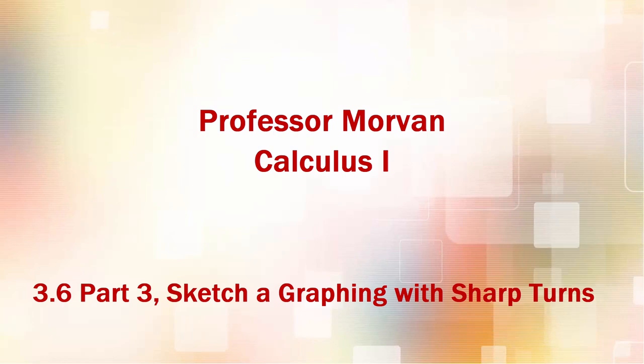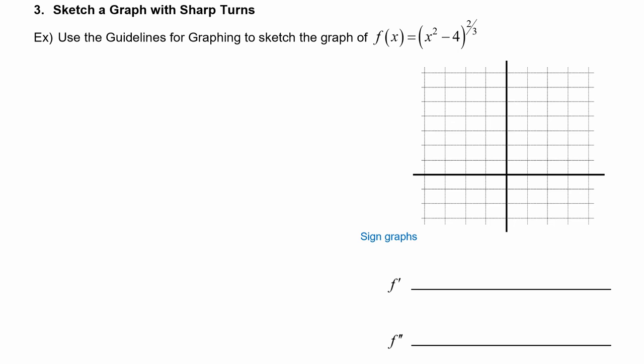In part three, you'll learn how to sketch a graph with sharp turns in it. Here we have to use the guidelines for graphing to sketch the graph of f(x) = (x² - 4)^(2/3).